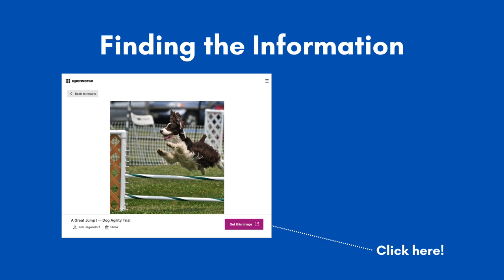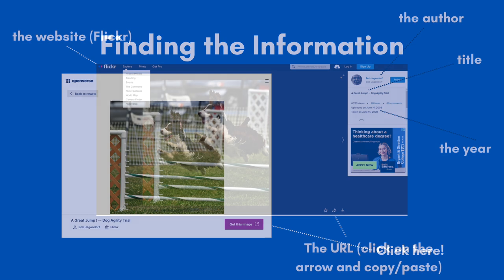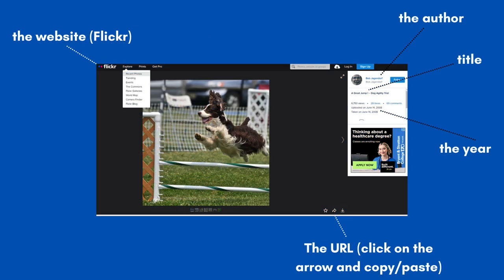This will open the page where the image lives. In this case, it lives on Flickr. Now that we're here, we can identify all of the pieces we need. The author's name is Bob Jagendorf. The year it was published and uploaded was 2008. The title is called "A Great Jump! Dog Agility Trial."